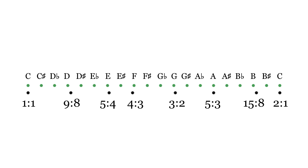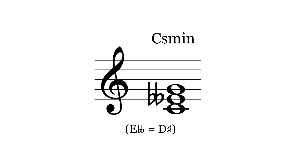19-tet has the subminor and supermajor third. These make the subminor and supermajor triad. The subminor triad is between a sus2 chord and a minor chord.